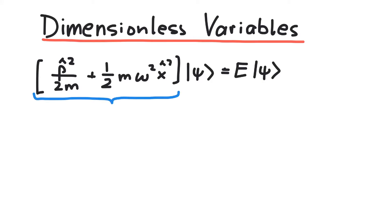Looking at dimensions, the brackets on the left have units of energy, since the insides represent the Hamiltonian, and on the right, we have the energy eigenvalue, which, of course, has units of energy.